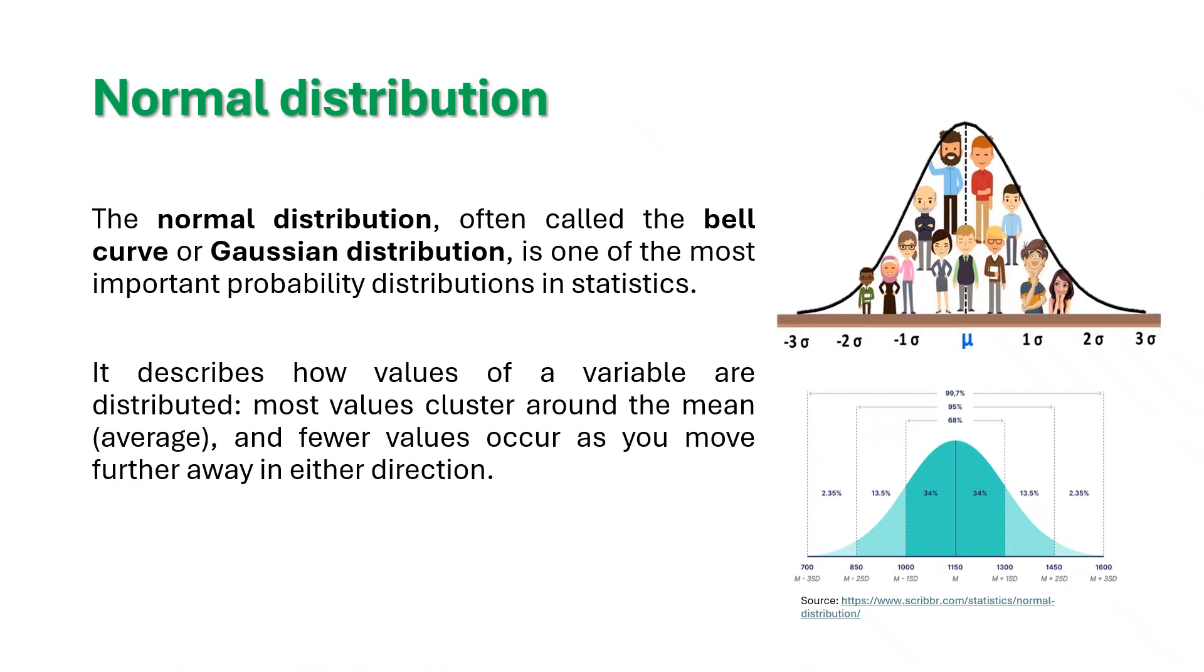Normal distribution is also called bell curve or Gaussian distribution, is one of the most important probability distributions in statistics and most widely used and exploited by researchers and decision makers.